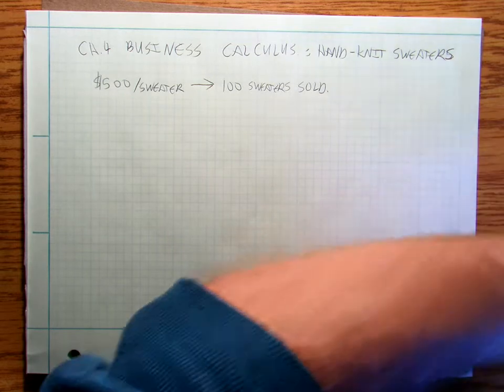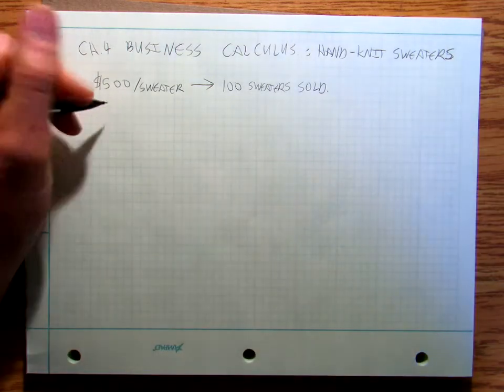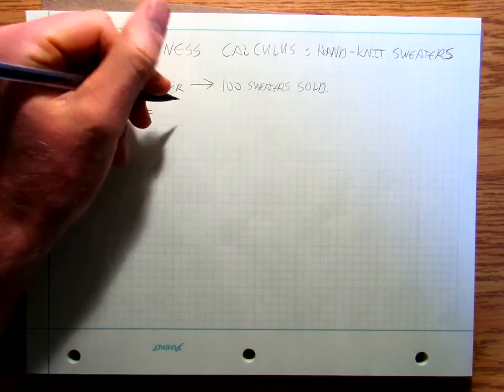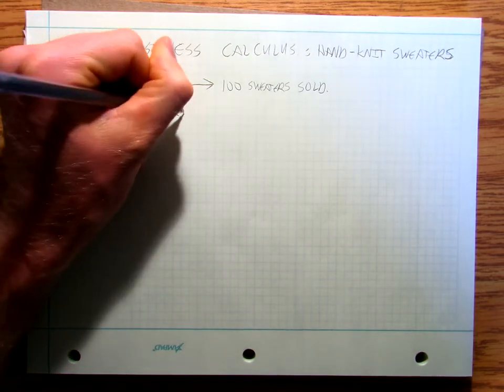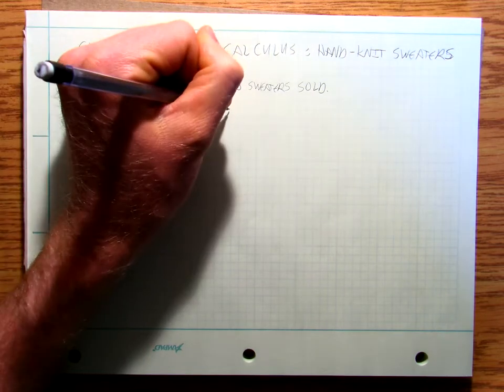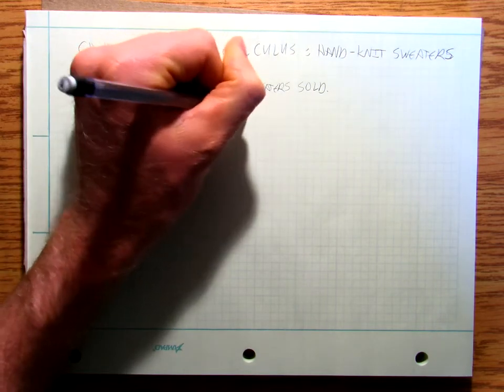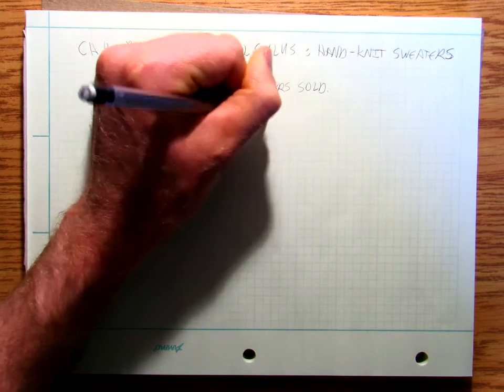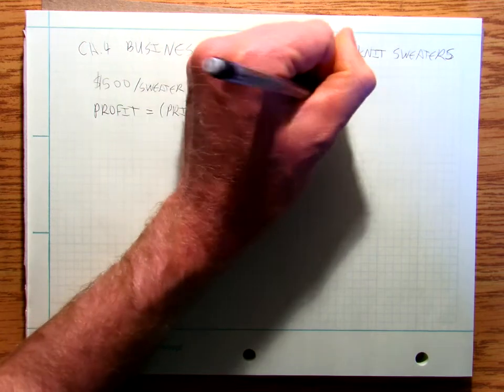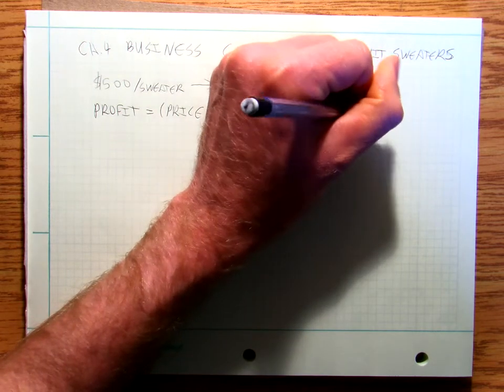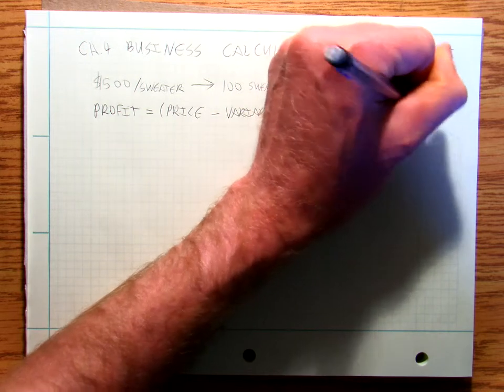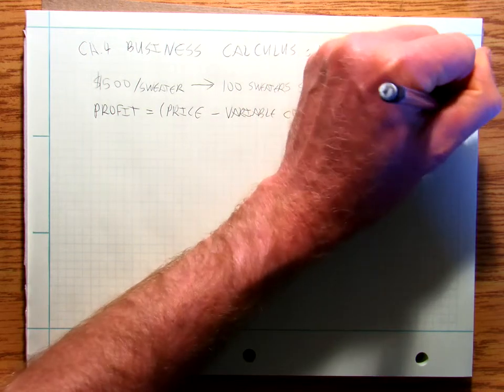Because you know just a little bit of business calculus, you sort of determine this formula. You say that profit is equal to your price minus your variable costs times your volume minus your fixed costs.